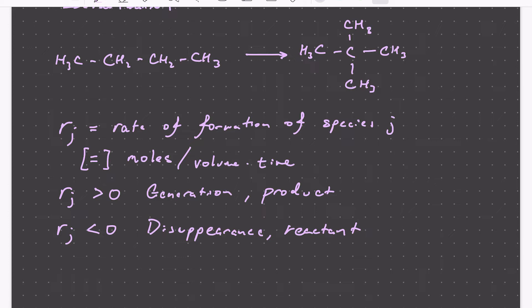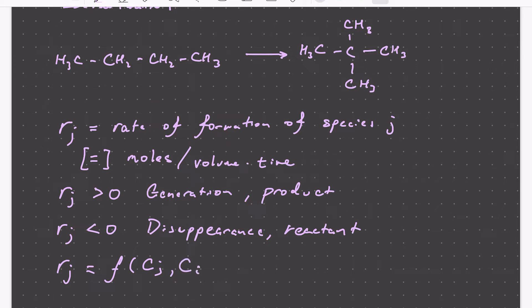So in general, R of J is going to be dependent on the conditions in which the reaction is taking place. It's going to be a function of the concentration of our species J and the concentration of other species, other reactants and products. It's also going to be a function of temperature. And if we have a catalyst present that helps facilitate this reaction, it's also going to be dependent on the presence of that catalyst. R of J is not going to be dependent on the type of reactor we use, so we'll see how we can use these rate expressions in reactor design equations, but the rate of reaction itself is not going to depend on which type of reactor we're using.